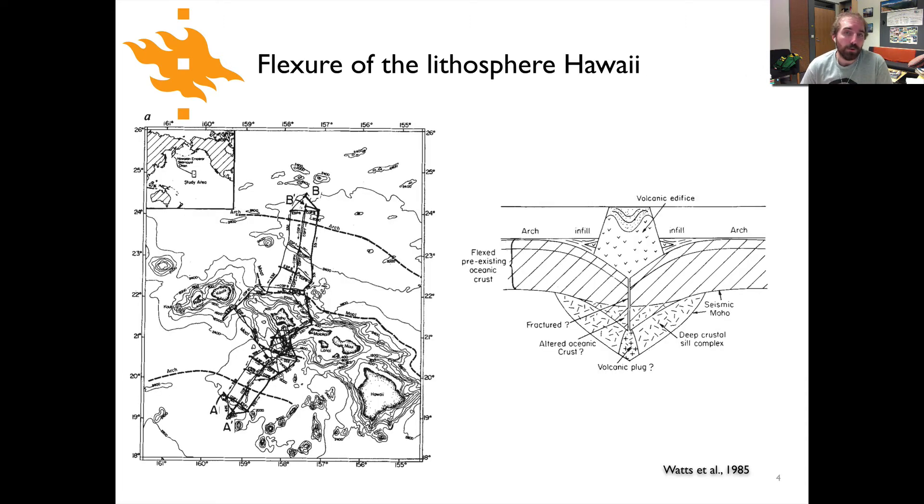We also saw the example of flexure of the lithosphere in Hawaii. This is the cross section view through the island of Oahu, and over here on the right side is our cartoon version of the volcanic edifice, this mass of rock that's formed as a result of volcanism.